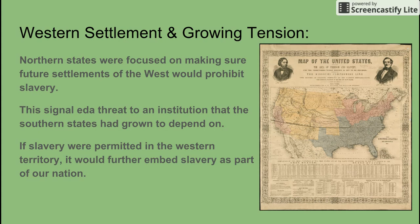The question about tension growing in western settlement — a lot of people had very guarded, safe, non-critical responses. What you want to see is that the northern states were focused on making sure that future settlements of the west would prohibit slavery; they did not want slavery to expand. This signaled a threat to the institution that southern states had grown to depend on — slavery. If slavery was permitted in this western territory, it would further embed slavery as part of our nation. We wouldn't be a country of half free and half slave — we'd basically be a slave nation.